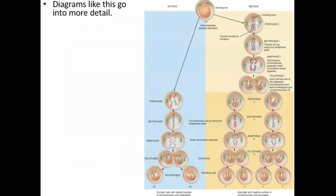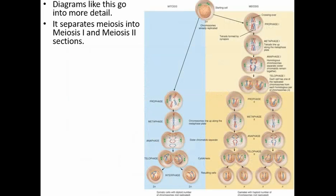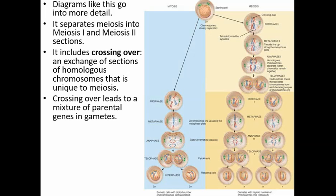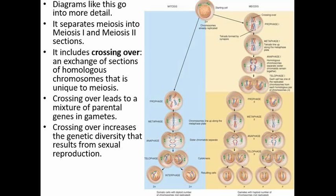More detailed diagrams separate meiosis into two sections: meiosis I, the first division, and meiosis II, the second division. It also includes the process of crossing over — something that happens right at the beginning of meiosis, where there is an exchange of sections of homologous chromosomes, a process unique to meiosis. Crossing over leads to a mixture of parental genes in the gametes, which increases the genetic diversity we get from sexual reproduction and leads to greater biodiversity.